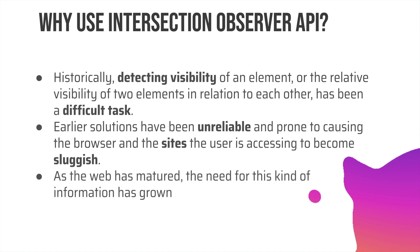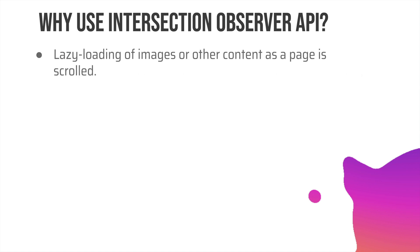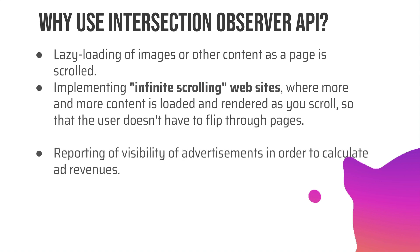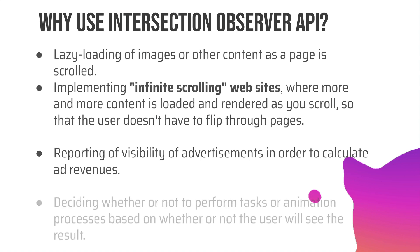As the web has matured, the need for this kind of information has grown. For example, we require lazy loading of images or other content as a page is scrolled. In our case we are going to implement infinite scrolling, where we load five or six posts first and load subsequent posts for as long as they are available, so the user doesn't have to flip through pages. Another use case is reporting the visibility of advertisements to calculate ad revenues, or deciding whether to perform tasks or animation processes based on whether the user will see the result.